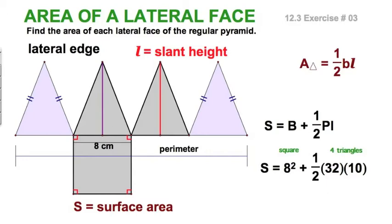We could find the area of one triangle multiplied by four. But by taking the perimeter, we're just doing them all at once. And our surface area works out to 224 square centimeters.